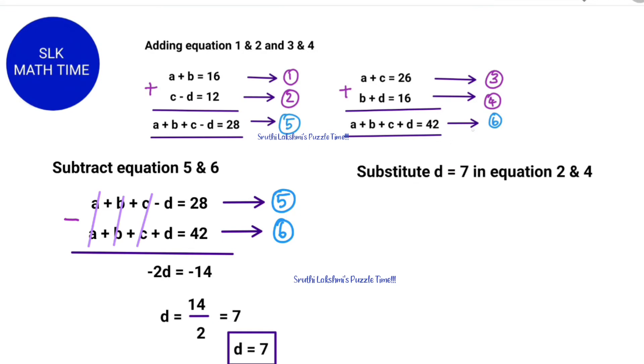Now let's substitute D in equation 2 and 4. C minus D is 12. So C equals 12 plus 7 equals 19. Because if we bring minus D to the opposite side it becomes plus D, and D is 7 so plus 7. And 12 plus 7 is 19 so C is 19.